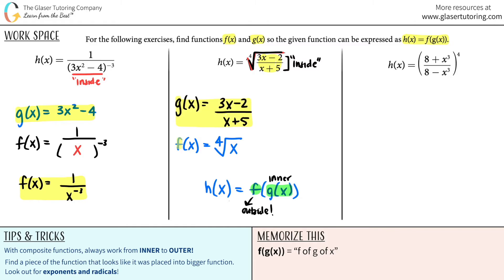Move on to the third one. We got this, guys. Okay. So let's see. Third one is h of x equals 8 plus x cubed divided by 8 minus x cubed all raised to the fourth. Is there anything that's trapped or inside something else? Yeah, you got it. It looks like this whole thing is inside these big parentheses. And that's all being raised to the fourth. So there you go. g of x is 8 plus x to the third over 8 minus x to the third.